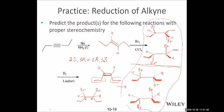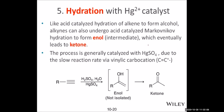Each chiral center will determine R or S, and then we will know which compound is which. This part was discussed in the last chapter — the R/S designation for each product. So anyway, this is the alkyne chapter and we'll be light on this stereochemistry part and move on to the next topic.